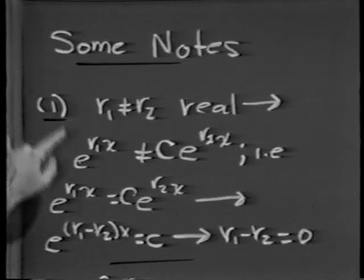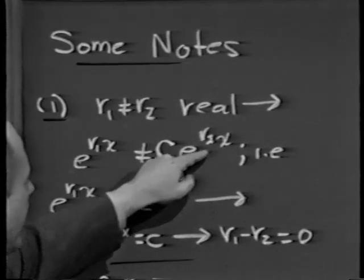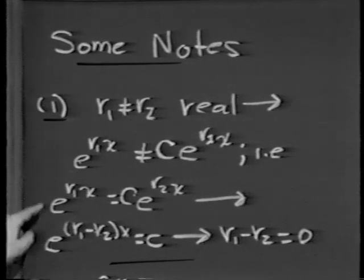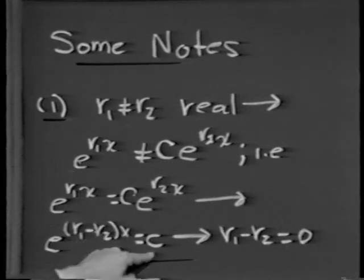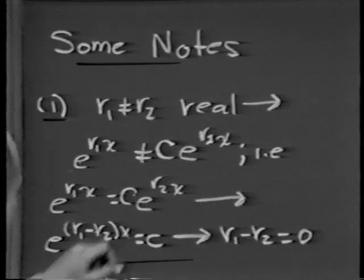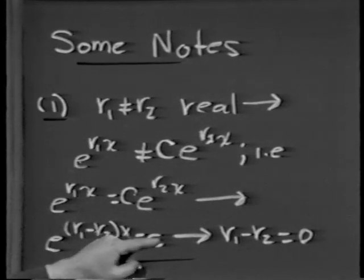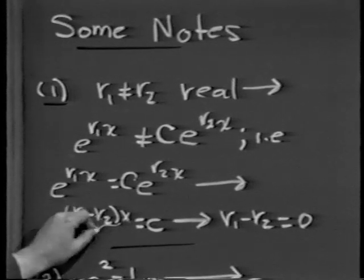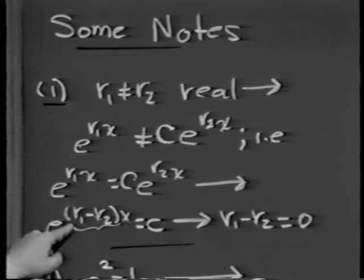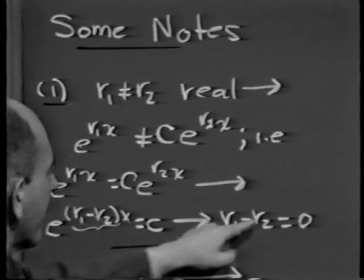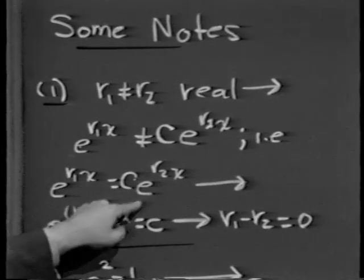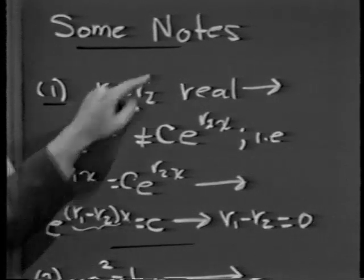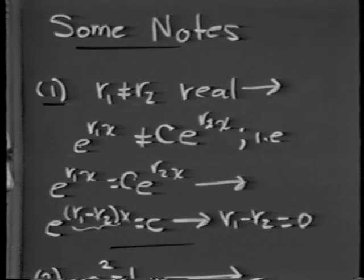Why can't e to the r1x and e to the r2x be constant multiples of one another? Assume they were — divide both sides by e to the r2x, giving e to the r1 minus r2 times x as a constant. But e raised to a variable power can only be constant if the multiplier of x is 0, meaning r1 minus r2 equals 0, i.e., r1 equals r2. Since Case 1 requires r1 not equal to r2, the solution is justified.